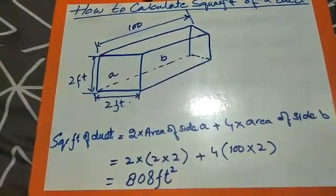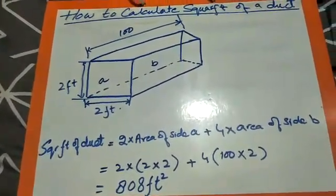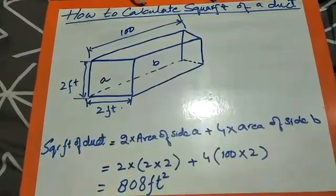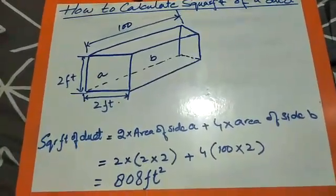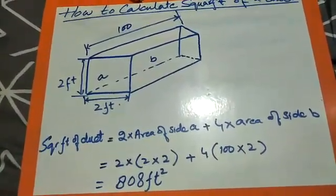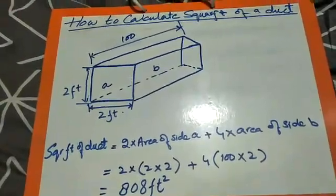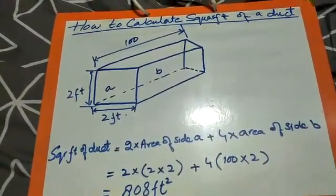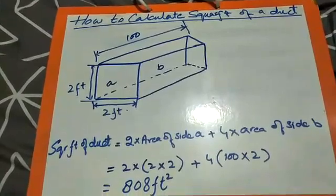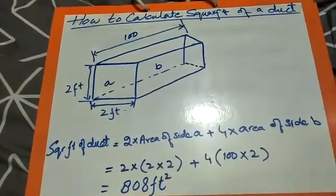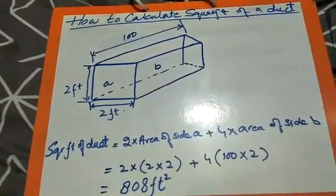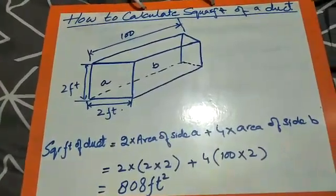Now for side B, in this duct there are four sides of equal size: front of B, back of B, top of B, and bottom of B. So the square foot of duct will be equal to 2 multiplied by area of side A plus 4 multiplied by area of side B.